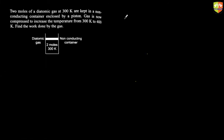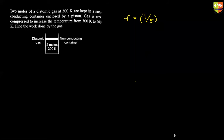The value of gamma is given directly as seven by five, so gamma = 1.4. Gamma has different values for monoatomic and diatomic gases — that we are going to learn in kinetic theory of gases. Right now I'm directly giving you the value of gamma.